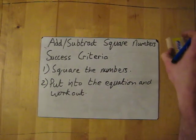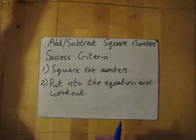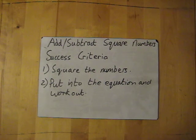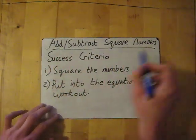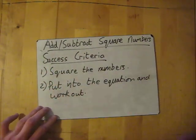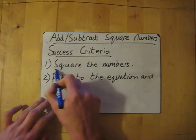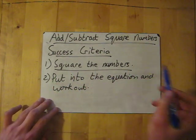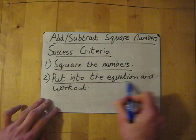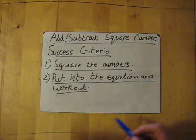Right, adding or subtracting square numbers. The success criteria for this is dead simple: you just square the numbers first, then put into the equation and work out.